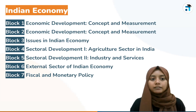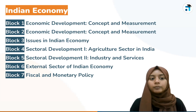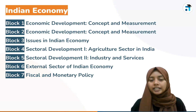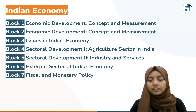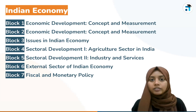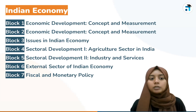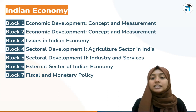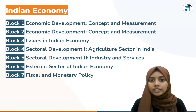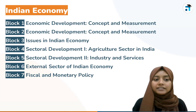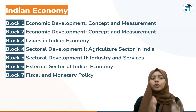Block 3 covers issues in Indian economy. Block 4 and 5 have three main sectors: agriculture, industry, and services. Block 6 is the external sector of Indian economy. Block 7 is fiscal and monetary policy.